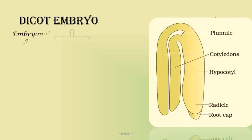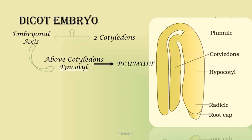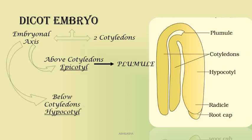The dicot embryo comprises two parts: the embryonal axis and the cotyledons — there are two cotyledons in the dicot embryo. The embryonal axis has two parts. The part above the cotyledons is known as the epicotyl, which will develop into the plumule, forming the shoot system. The part below is known as the hypocotyl, which develops into the radicle or root system, which has a root cap at its tip to protect the radicle from abrasion or destruction due to microorganisms in the soil.